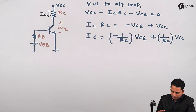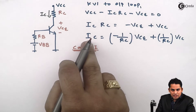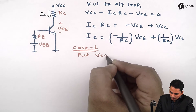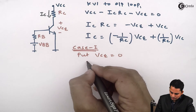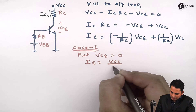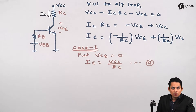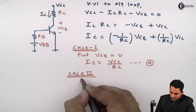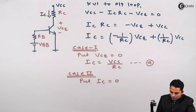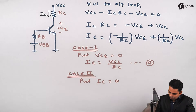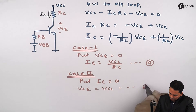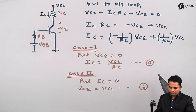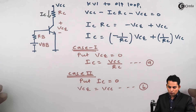Case 1: In order to get IC, we put VCE equal to 0. Hence IC becomes VCC divided by RC. This is Point A. Case 2: In order to get VCE, we put IC equal to 0, which gives VCE equal to VCC. This is Point B. We now have two points A and B through which a DC load line can be drawn.